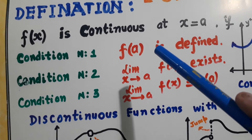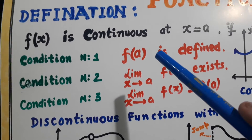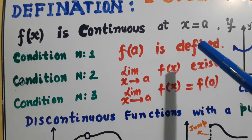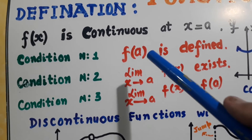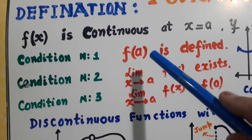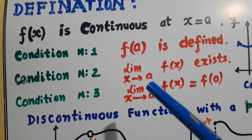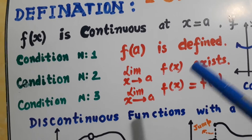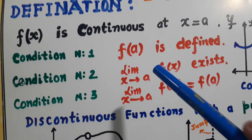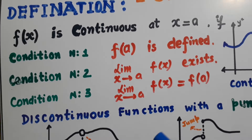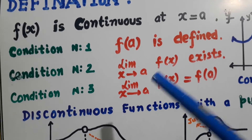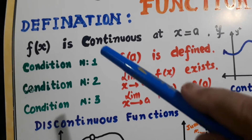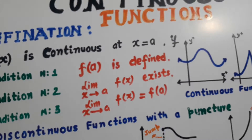Condition number one: f(a) is defined — it means it is finite. Condition number two: limit exists — it means it is a definite limit. Condition number three: limit is equal to value. These are three must conditions.